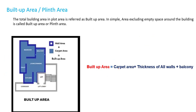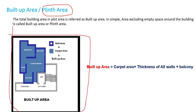The next term is built-up area or plinth area — this is also very important. The total building area in a plot area is referred to as built-up area. So let's suppose this is our plot area, and within this plot area we have the built-up area — this is the building area. Area excluding empty spaces around the building is called built-up area or plinth area.